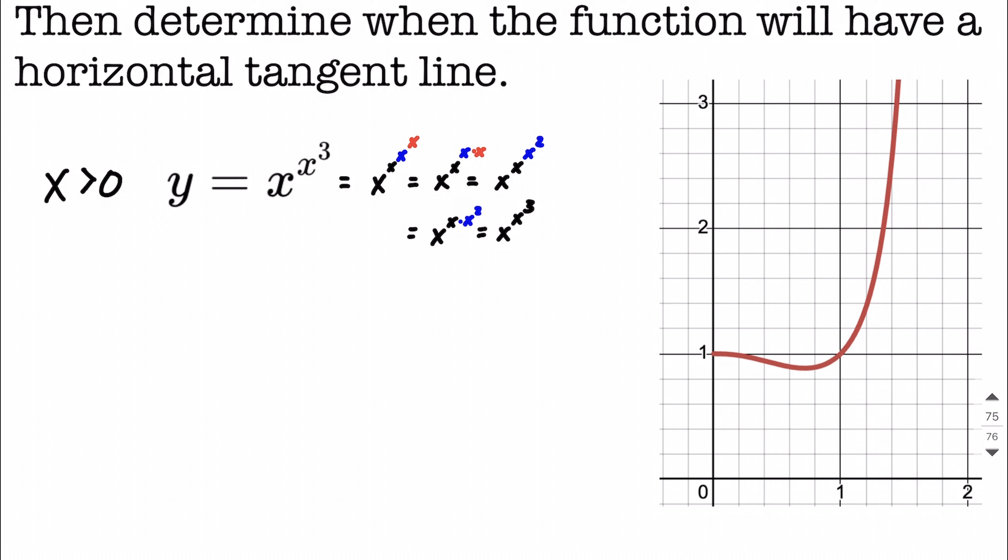After we take this derivative, then we're going to determine when the function will have a horizontal tangent line. And from the graph, you may be able to kind of pick out, it looks like it's happening right about here. If we try to draw a horizontal line going across there, it looks like it's tangent to the graph right around there.